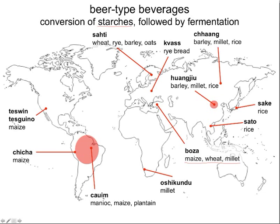Let's not leave out Europe. Sahti from Finland has sugars derived from wheat, barley, and/or oats. Kvass is actually made from bread — that's a Russian or Ukrainian beverage. Back in northern China and Mongolia, there's chang, made from barley, melon, and rice. And huangju is a beer-type beverage derived from barley, millet, and rice — grains available very early in human history, around 4,000 BCE. People have been making alcoholic beverages, whether wine-type or beer-type, for thousands of years, since the dawn of human history.